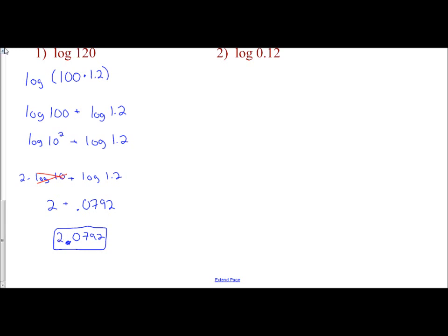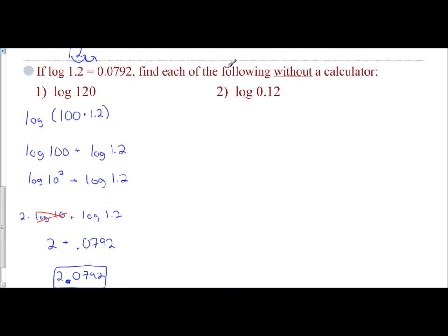It's the same thing here. If I want log of 0.12 and I'm given log of 1.2, how does this number relate to that number? If I have 1.2, then 0.12 is if the decimal place is moved one spot to the left, which means you're doing division. So I'm taking log of 1.2 and dividing by 10. We're dividing our expression, which means we are subtracting. So we do log of 1.2 minus log of 10.